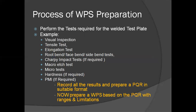After performing the test, examine the welded test plate or pipe. Examinations include visual inspection, tensile test, bend test, impact test, and other mechanical tests as described in the referencing specification. Record all the results and prepare a Procedure Qualification Record (PQR). After that, prepare a WPS based on the PQR.